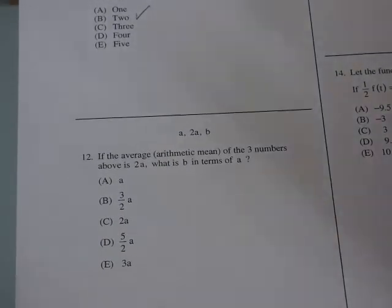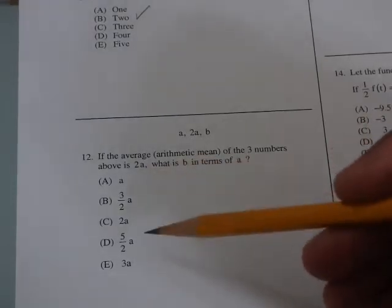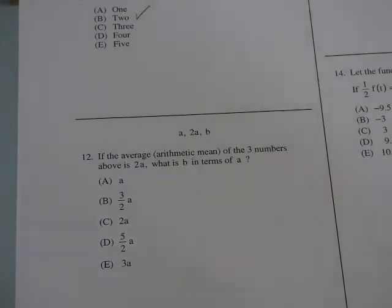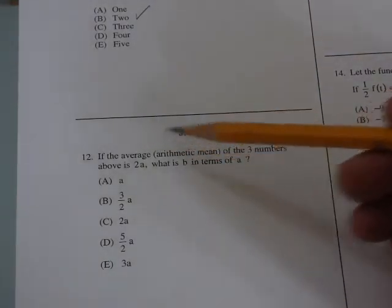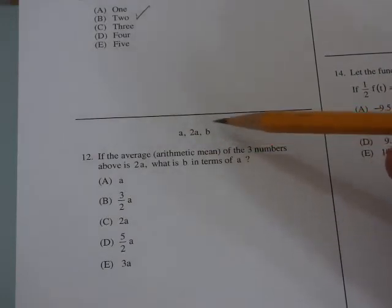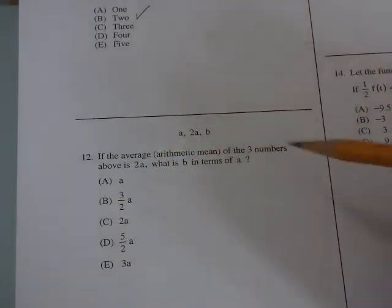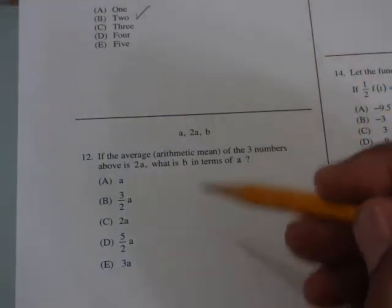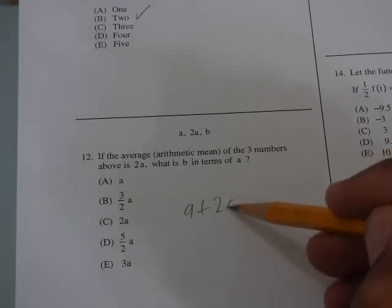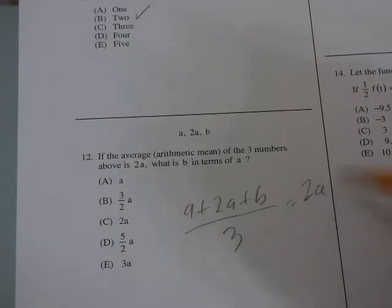Next question is number 12. Now when I look at this kind of problem, first thing I do is I'm looking at the answers. I see that the answer has a bunch of variables in it. So I'm thinking that possibly I can plug in here. So it says if the average of a, 2a, and b of the three numbers above is 2a, what is b in terms of a? So I would basically solve this doing plugging in. So here's what the equation would look like if I were writing it: (a + 2a + b)/3 = 2a.